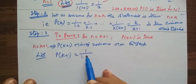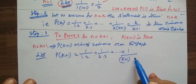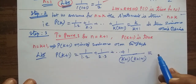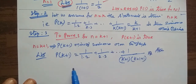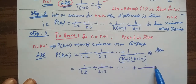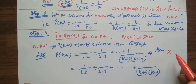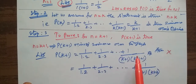Let the statement be P(k+1) equal to 1 by 1 into 2, plus 1 by 2 into 3, and so on, equal to 1 by (k+1) into (k+2). Now, I noticed a mistake in this video — the second step was wrong. The reason is that k plus 1 involves k plus 1.